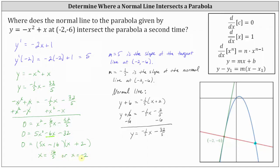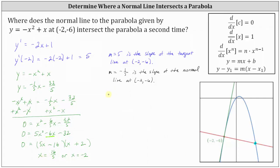Notice x equals negative two is the x-coordinate of the point of intersection that was given to us. So for the second point of intersection — this one here in the fourth quadrant — the x-coordinate is sixteen fifths. To find the y-coordinate, we can substitute sixteen fifths into either the parabola equation or the normal line equation. Let's use the equation for the normal line: y equals negative one fifth x minus thirty-two fifths.